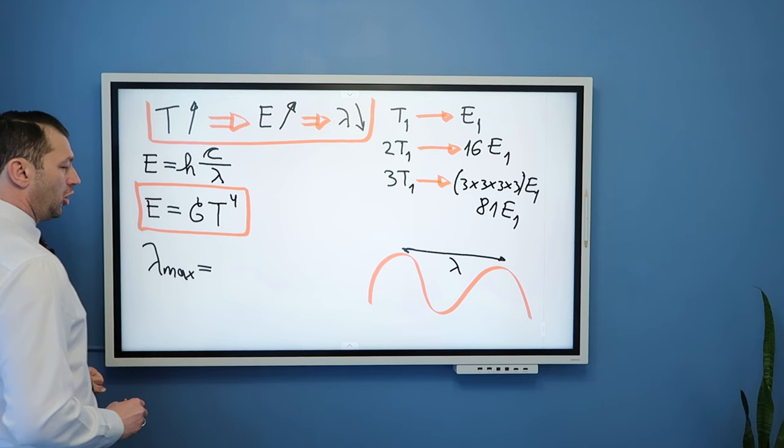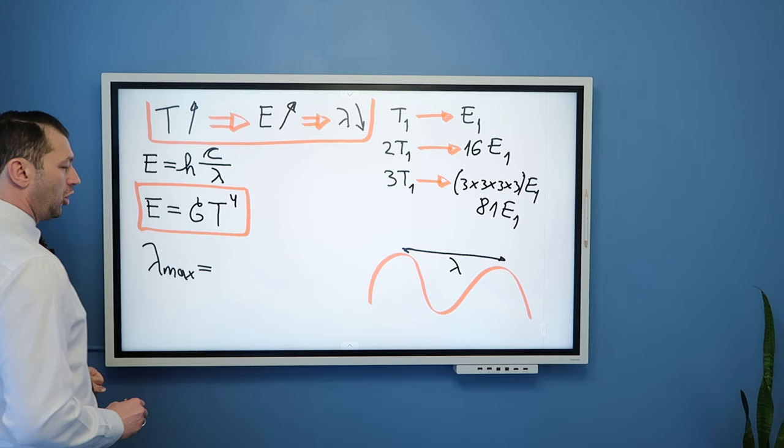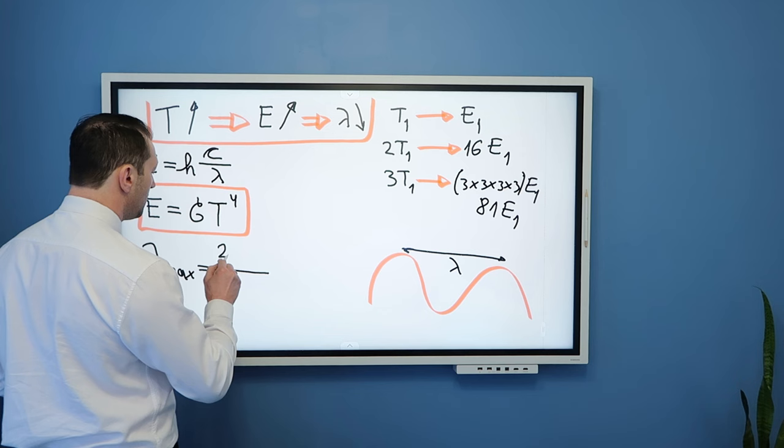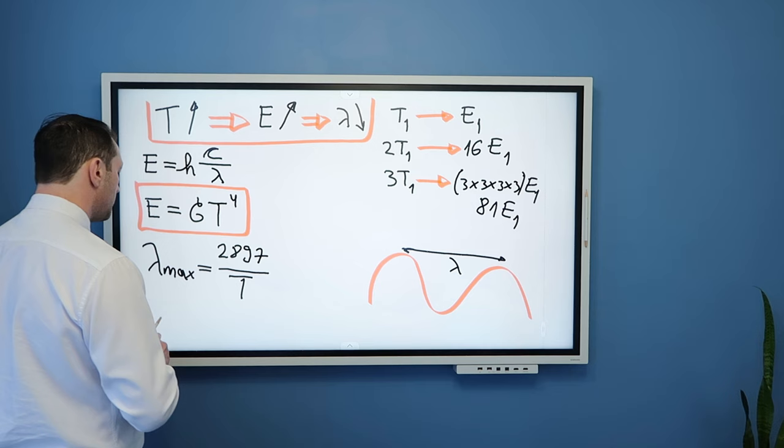And we can find that wavelength known as lambda max from the great Wien's law that is equal a constant 2897, I believe, divided by temperature. This is known as Wien's law.